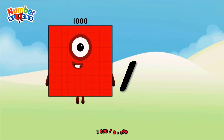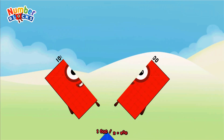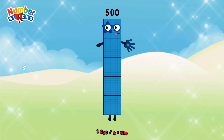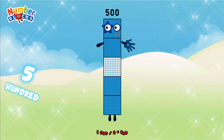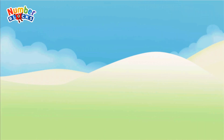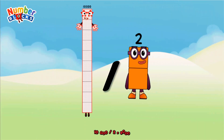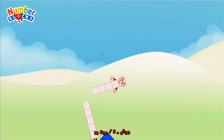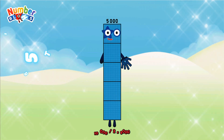1,000 divided by 2 equals 500. 10,000 divided by 2 equals 5,000.